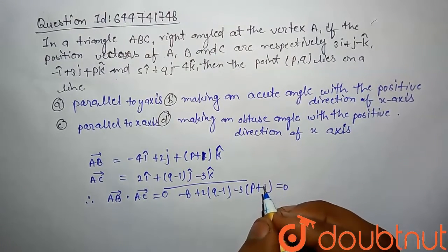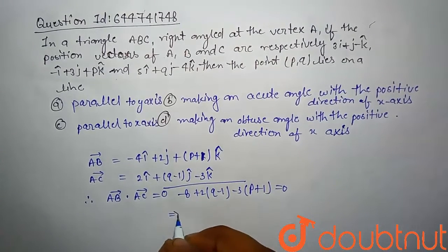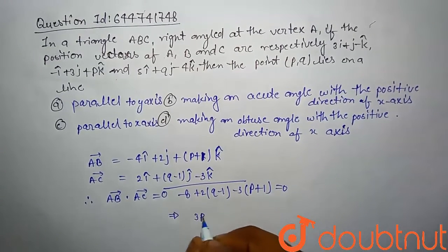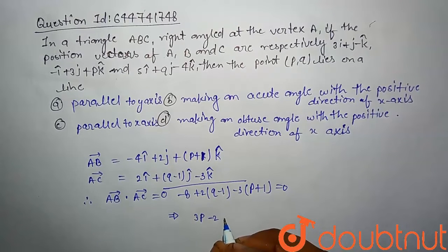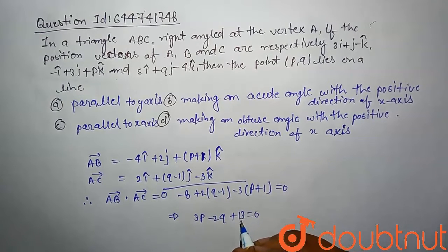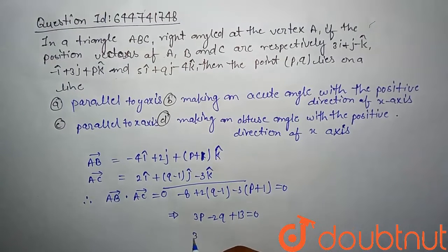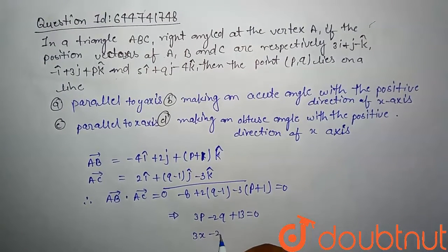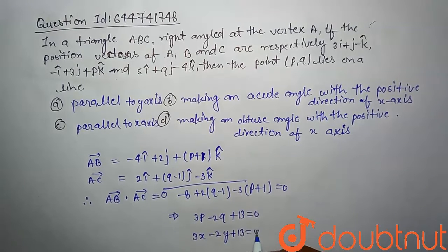This implies 3p - 2q + 13 = 0. Hence (p, q) lies on the line which is 3x - 2y + 13 = 0.